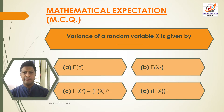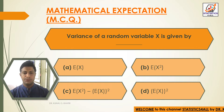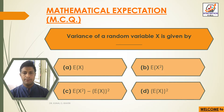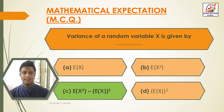Variance of a random variable x is given by: Option A — E(x); Option B — E(x square); Option C — E(x square) minus E(x) whole square; Option D — E(x) whole square. The answer is Option C: E(x square) minus E(x) whole square. That is the variance of a random variable x.